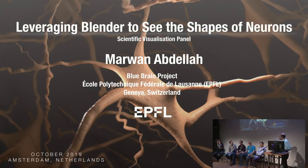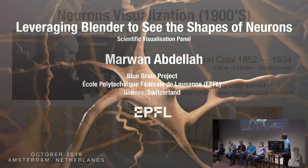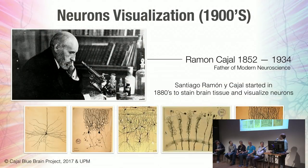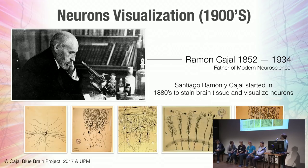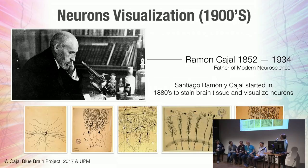Scientific visualization of the brain like 100 years ago was something exactly like this. Before even the time of open sourcing, this researcher was just using a microscope to see the individual shapes of neurons using a staining technique called Golgi staining. This is how we used to see the brain 100 years ago or even more.